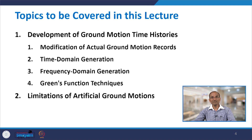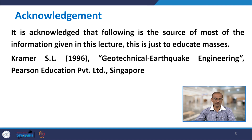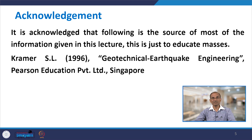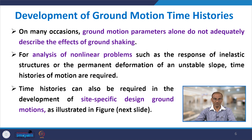Finally, we are going to talk about the limitations of artificial ground motions. Most of the material for local site effects is taken from Kramer's book, which is the main source for the information covered here.